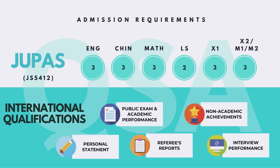For admission requirements, if you are applying through the JUPAS system, we require four core subjects and two electives. If you have taken M1 or M2, the subject will be counted as one elective, and the score will be multiplied by 1.5. We also double count the score of English and mathematics. If you are an international applicant, we will review both your academic and non-academic performance, your personal statement, referees' reports, and interview performance. You may also check out the respective admissions requirements on the admissions office website at join.ust.hk.